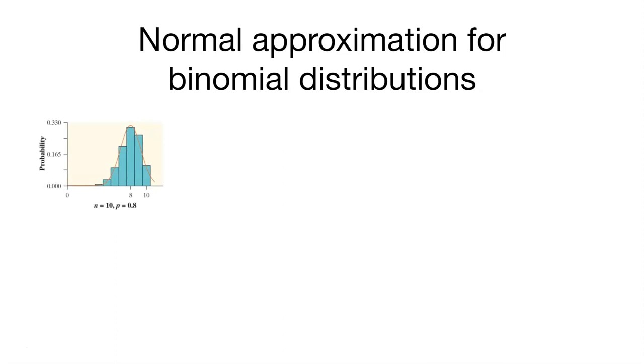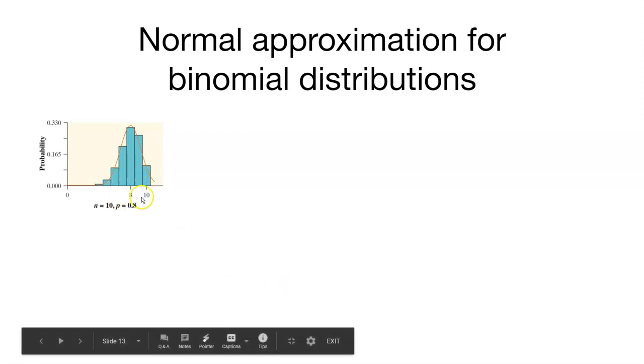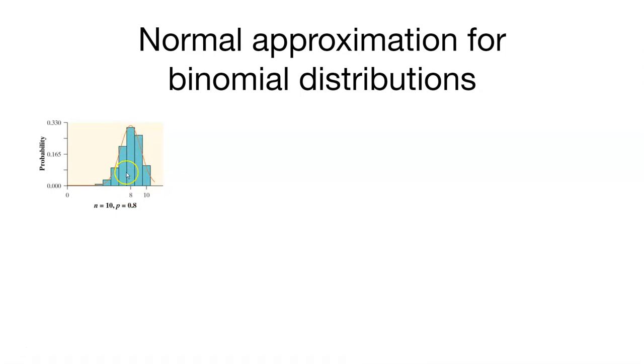Let's step through this normal approximation and how it looks. Here we have n equals 10 with a probability of 0.8. If we sample 10 times with a probability of 0.8, we would expect about 8 times to have what we call success. That's where you see the peak of the curve.